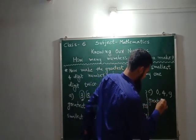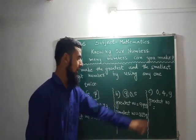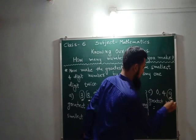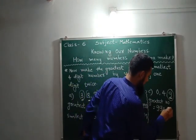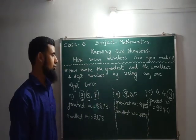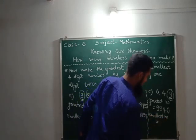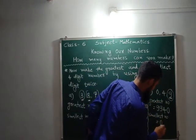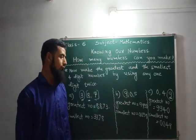Last sum: greatest number using 0, 4, and 9. Tell me which number is the biggest? 9. So it will repeat 2 times. Then among 0 and 4, which is the biggest? 4. And the remaining is 0. So we have made the four-digit greatest number. Then for the smallest number: 0, 4, 9.